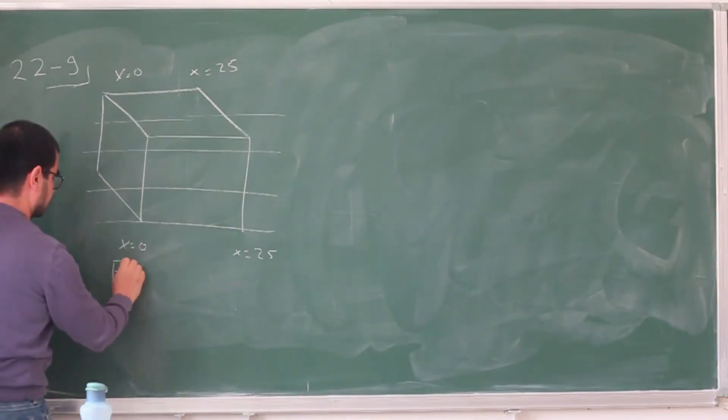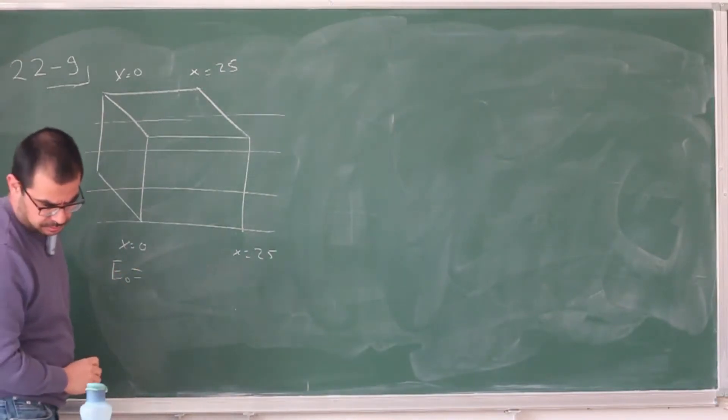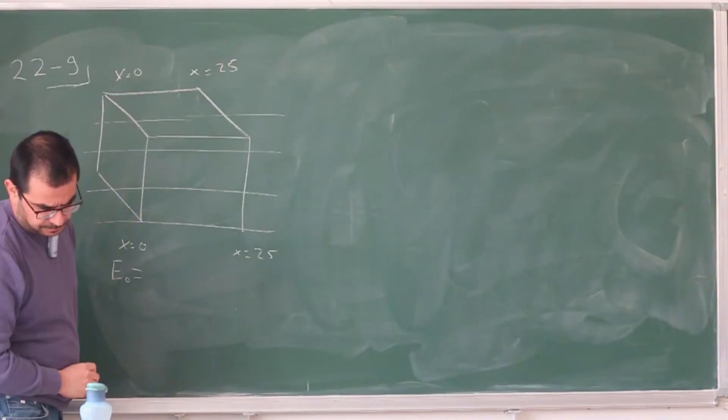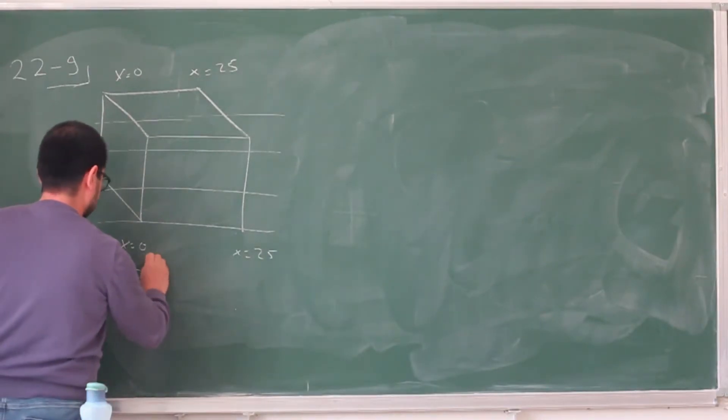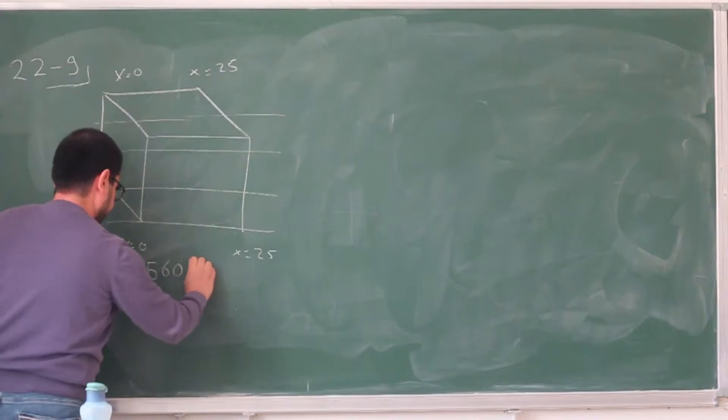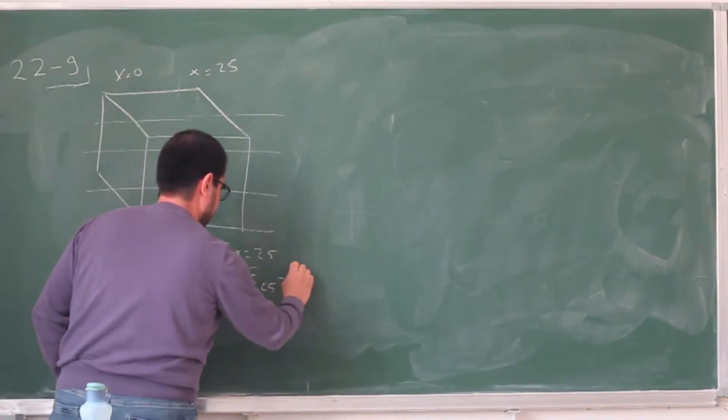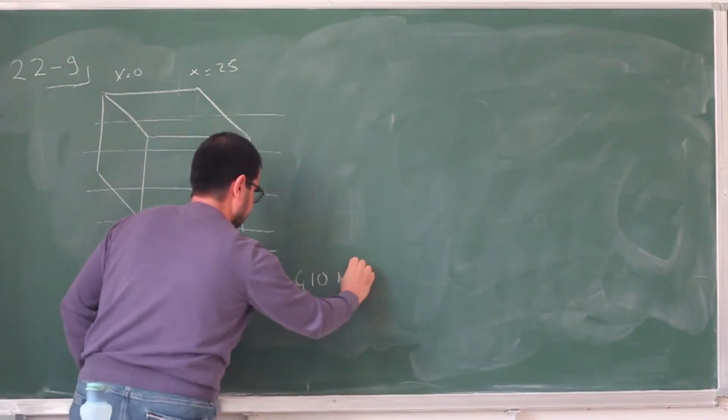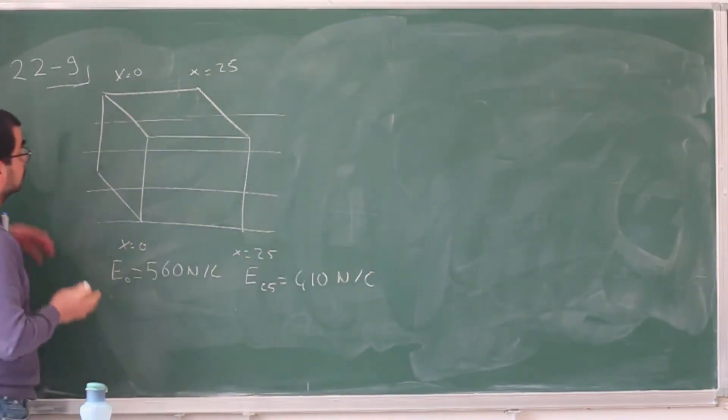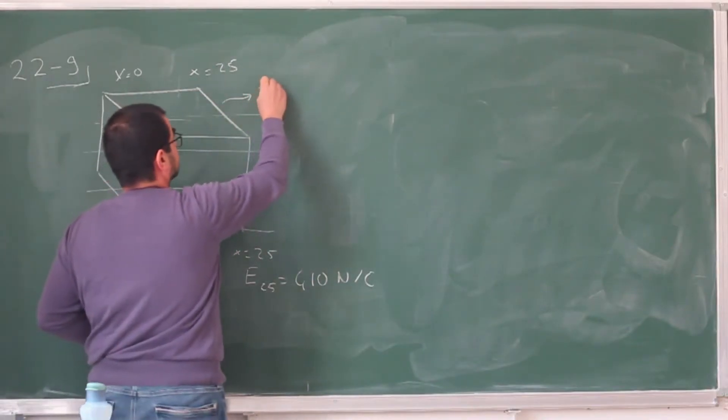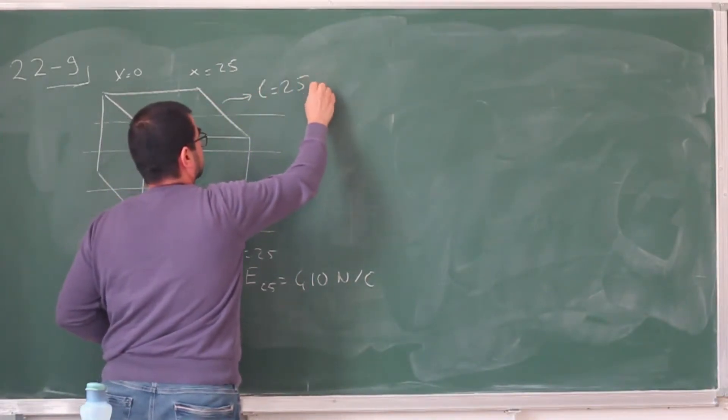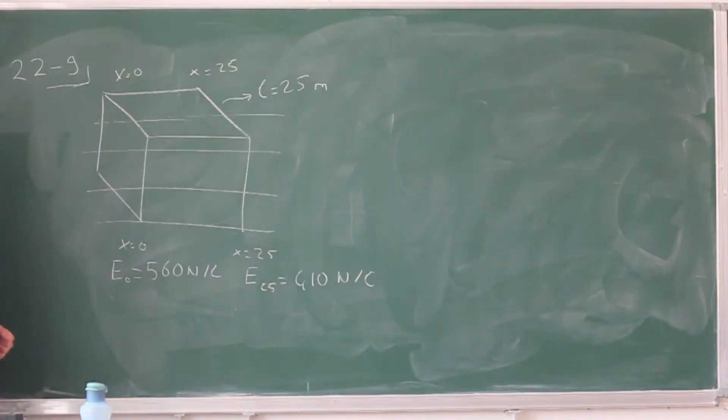And this E0 is given to be 560 N per Coulomb. And this E25 is 410 N per Coulomb. So it's horizontal. There is this cubical region where the side is 25 meters. And we are asked the charge enclosed by this cubical region.